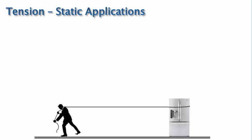Consider this picture, where a person wraps a rope around a refrigerator and begins to pull it. If we drew the force by the rope on the refrigerator, it would look like this.